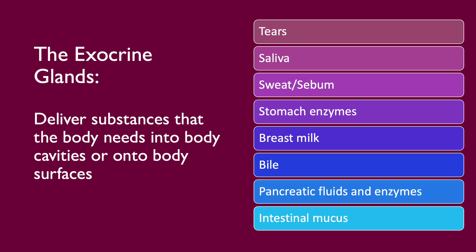Let's start with the exocrine glands. Exocrine glands deliver essential substances that the cells synthesize and secrete directly onto body surfaces, like the skin or body cavities. These include things like tears, saliva, sweat or sebum, stomach enzymes, breast milk, bile, pancreatic fluids and enzymes, and intestinal mucus.